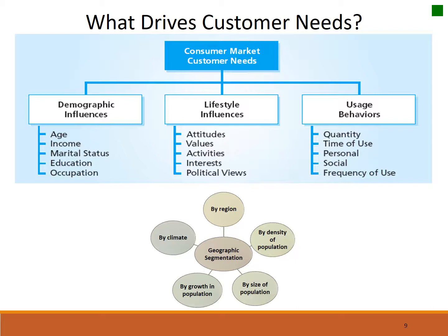We have lifestyle influences, which may be a little bit more difficult, and we can expand on those more in psychographic measures. We also have usage and behaviors — such as when somebody buys, how often they buy, the quantity in which they buy, whether they buy with other people, whether they purchase late at night or early in the morning. Those are all behavioral types of things. Geographic characteristics include things like the climate by region and density of population.